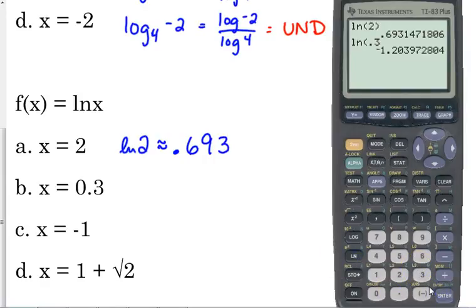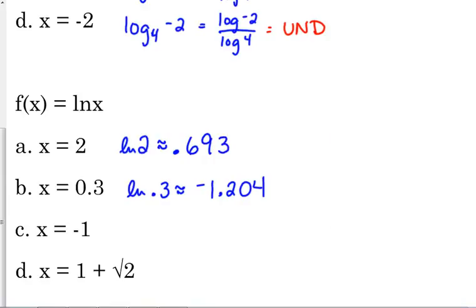Natural log of 0.3, negative 1.204. That should be negative, because 0.3 is a number that is less than 1. Only way we're going to get a number less than 1 is if we've got a negative exponent to put something in the denominator. C, automatically, what can you tell me? Undefined. Okay? Cannot take the natural log or the common log or any log of a negative number.